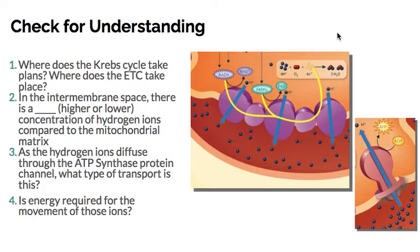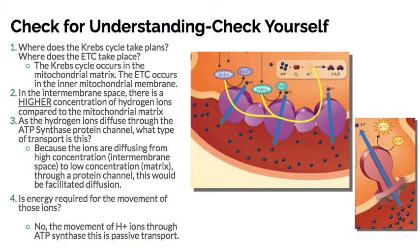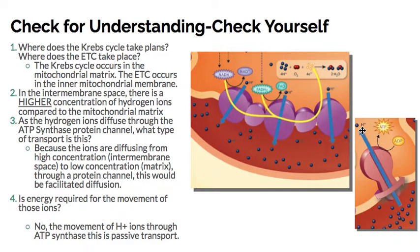Let's pause and try this check for understanding, then we will come back and answer these together. Number one: the Krebs cycle occurs in the mitochondrial matrix and the electron transport chain occurs in the inner mitochondrial membrane. In the intermembrane space, there is a higher concentration of hydrogen ions compared to the matrix. As the hydrogen ions diffuse through the ATP synthase channel, what type of transport is that? Because they are diffusing from high concentration in the inner membrane space to lower concentration in the matrix through a protein channel, that would be facilitated diffusion — high to low, using a protein channel, so no energy is required. The movement of ions through ATP synthase is passive transport, specifically facilitated diffusion.